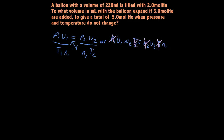So it gives us our first volume, V1 — 220 milliliters. And then it gives us our N2, which is 3 moles, because it says the balloon will expand if 3 moles of helium are added. So that's our N2, times 3 moles of helium.